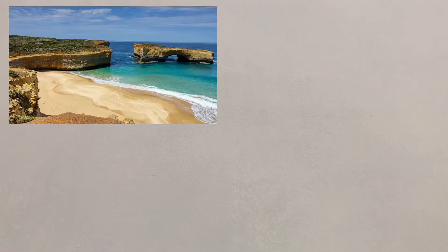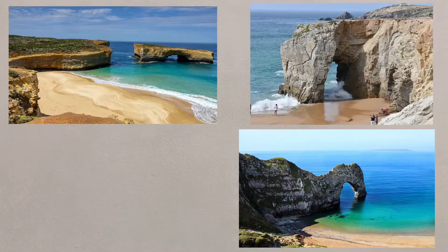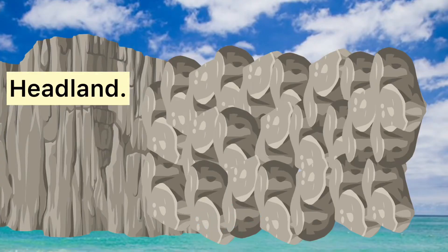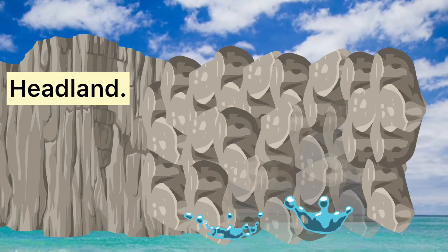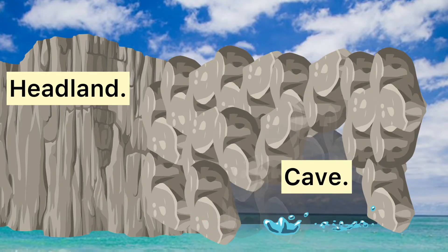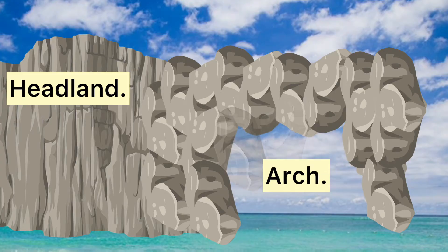The headland will slowly erode, and as it does, it creates some fascinating landforms. Waves will attack lines of weakness in the rock, and these will open up to create caves. Eventually, the cave deepens and cuts through the headland to create an arch.